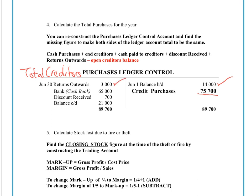If we returned $3,000 worth of goods, that comes out of returns outwards and into the creditor account. When we paid our creditors, that comes out of our bank account shown in the cash book — it's debited and goes into the creditor account. Any discounts received would also be shown on the debit side of the creditor account. If the purchases ledger control showed we still owed suppliers $21,000 at the end of the month, the total on that side of the equation is $89,700. With only $14,000 opening balance, the difference of $75,700 is the value of all purchases made from suppliers on credit — the missing piece of information.